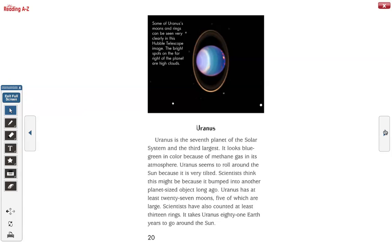Uranus. Some of Uranus's moons and rings can be seen very clearly in this Hubble telescope image. The bright spots on the far right of the planet are high clouds. Uranus.